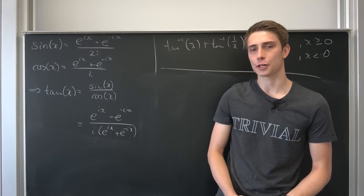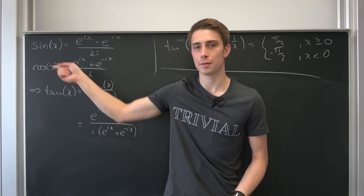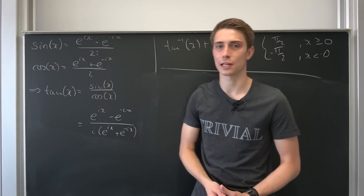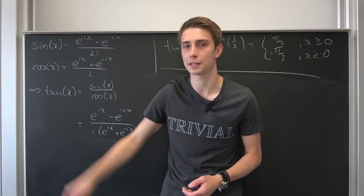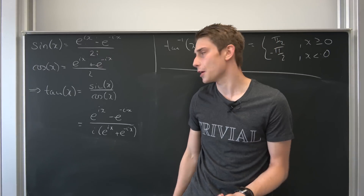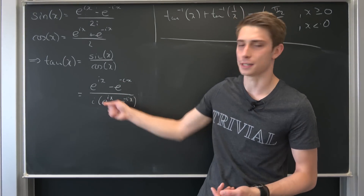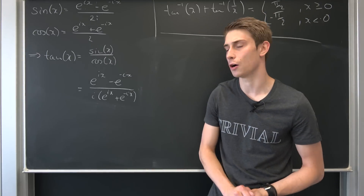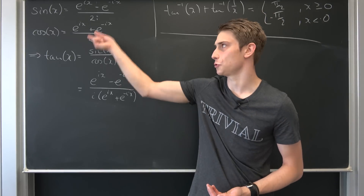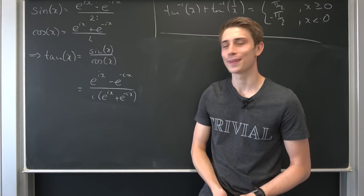First, remember that sine of x can be represented using the exponential function, and cosine likewise. Tangent is nothing but sine over cosine, so we get this expression with the 2's canceling out.